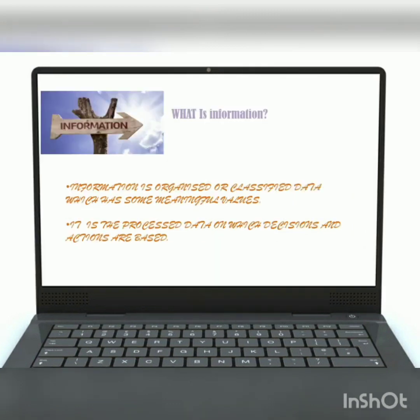Moving to the next topic — what is information? Data which is processed by the computer is called information. Information is the organized or classified data which has some meaningful values. For example, 1 plus 1 is the raw data, but after receiving the result — 1 plus 1 equals 2 — the value 2 is the output meaningful value. That is what is called information.